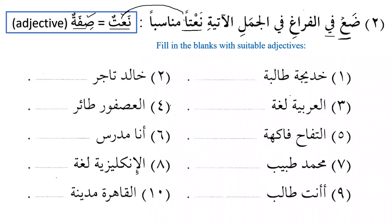Remember that Khadijah will not take tanwin — it will be 'Khadijatu.' We say 'Khadijatu talibatun mujtahidatun.' You can put any adjective there. I have adjectives like mujtahidatun, jadidatun, jamilatun — but it is not necessary to use only these; you can use any adjective. The key is that noun and adjective must be equal in capacity, number, gender, and status. Khadijatun is feminine, so the adjective must also be feminine — for example ghaniyyatun or shahiratun.